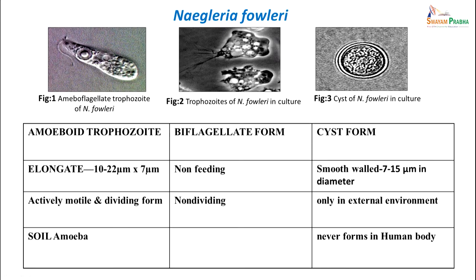When we talk about Naegleria fowleri, it has three morphological forms: the amoebo-flagellate form, the biflagellate trophozoite form, and a cyst. The amoeboid trophozoite is an elongate structure which is 10 to 20 microns by 7 microns - it is the actively motile and dividing form, the feeding form, and is also found in soil. The biflagellate form is the non-feeding, non-dividing form with two flagella. The cyst is a smooth-walled structure 7 to 15 microns in diameter, present only in the external environment and never seen in the human body. So three morphological forms are seen.